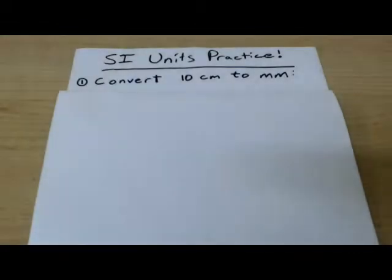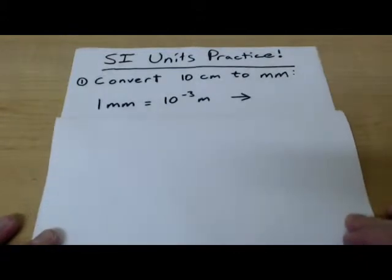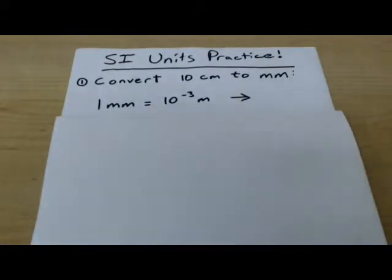Okay, so our first problem. Convert ten centimeters to millimeters. So how many millimeters do ten centimeters make? So the first thing we have to look at is directly from the table that I showed earlier. And it's that one millimeter is equal to ten to the negative three meters.